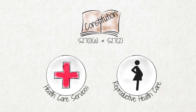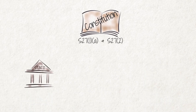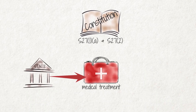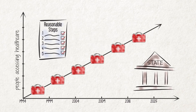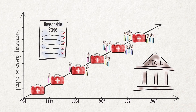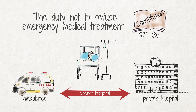The Constitution guarantees everyone the right of access to health care services. This does not mean that everyone has the immediate right to the best possible medical treatment at state expense. It does mean that the state must provide medical treatment to those who cannot afford to pay for it. The state must take steps to ensure that an increasing number of people have access to continuously improving health care services as fast as resources will allow. No medical facility can turn away a patient who is in need of emergency medical treatment.